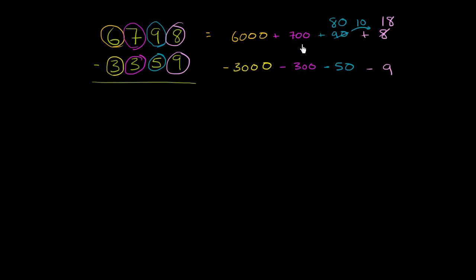Instead of saying it's 6,000 plus 700 plus 90 plus 8, I'm just saying that it's 6,000 plus 700 plus 80 plus 18. Those are both going to give you 6,798. But now it becomes a little bit easier for us to actually subtract. Now if we subtract, I have 18 minus 9, which is 9.